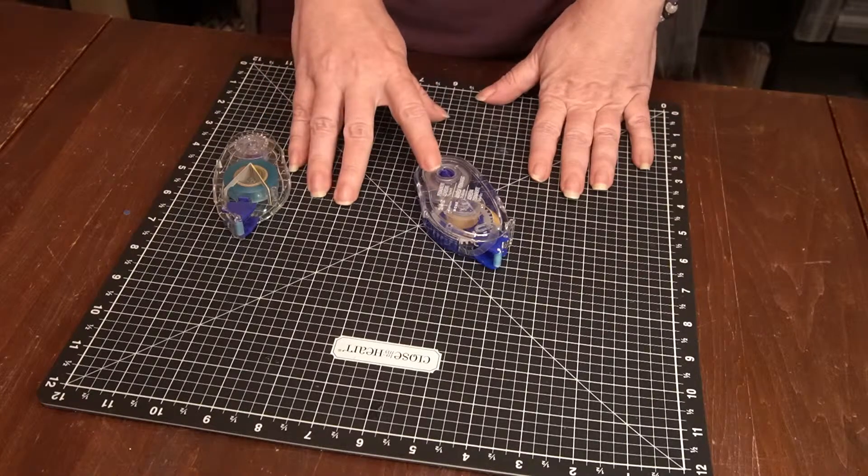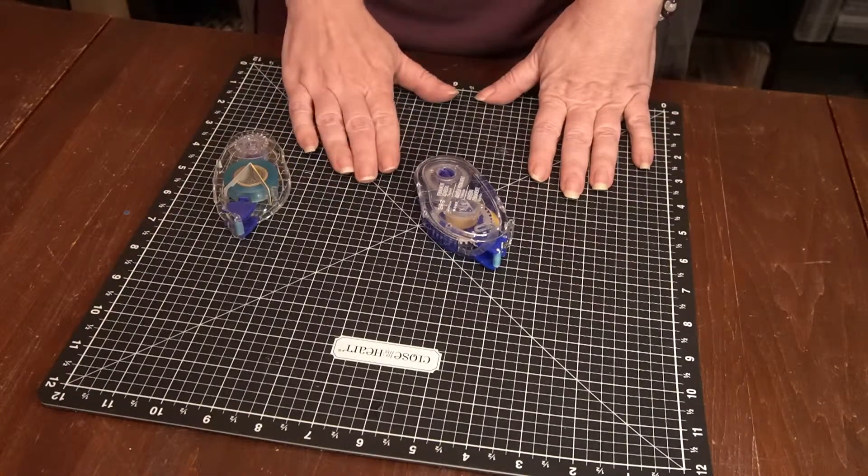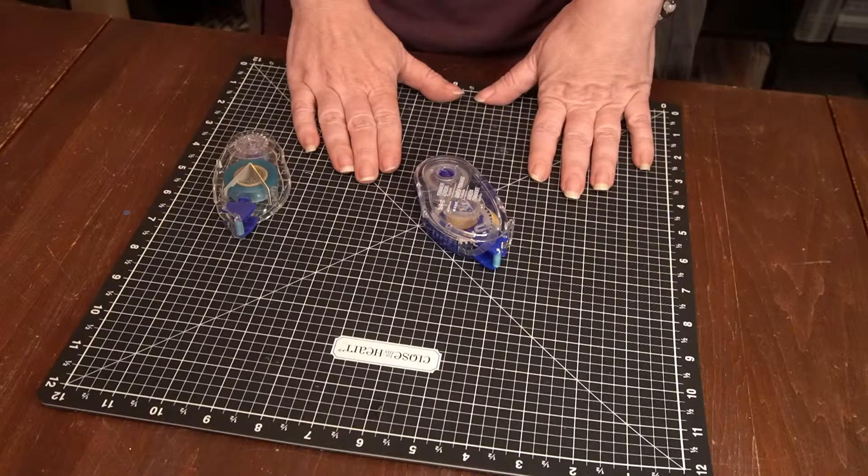This is the Tombow Tape Runner. If you're used to the old school Hermi, you've been working really hard to refill your adhesive.